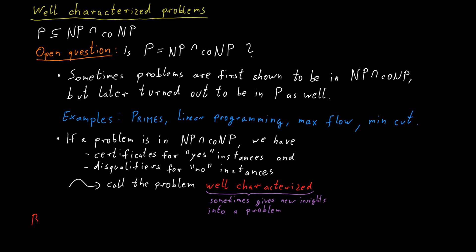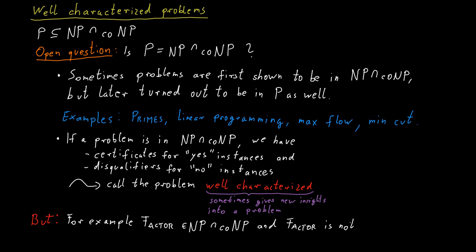On the other hand, there are also notable examples that are exceptions to this, and factor is one such example. Factor is known to be in the intersection of NP and co-NP, but it's not clear whether factor is in P.